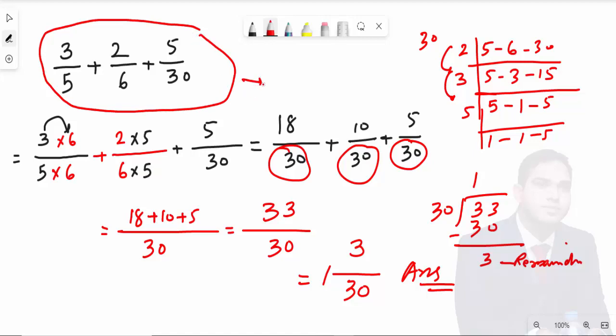Students, this is a simple question. If you still have any problem, you can comment under the video. The first step is you need to see the denominators—if they are the same, then you can just add the values. If they are not the same, then you have to take the LCM and make them equal, like I did here: 30, 30, 30, and easily add the numbers. Thank you for watching this video.